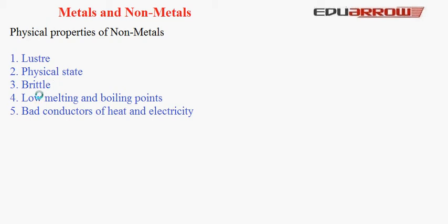4. Low melting and boiling points: Non-metals are easily melted at low temperatures and are also easily boiled. In fact, many non-metals exist in vapour states at room temperature. 5. Bad conductors of heat and electricity: They are not good conductors of heat and electricity, except carbon in the form of graphite, which is a good conductor of electricity.